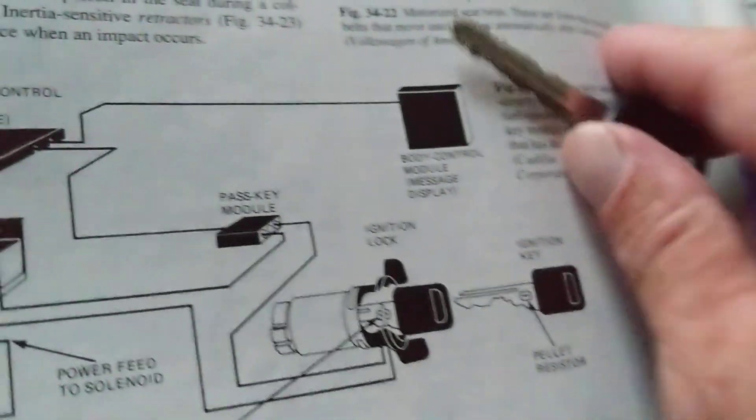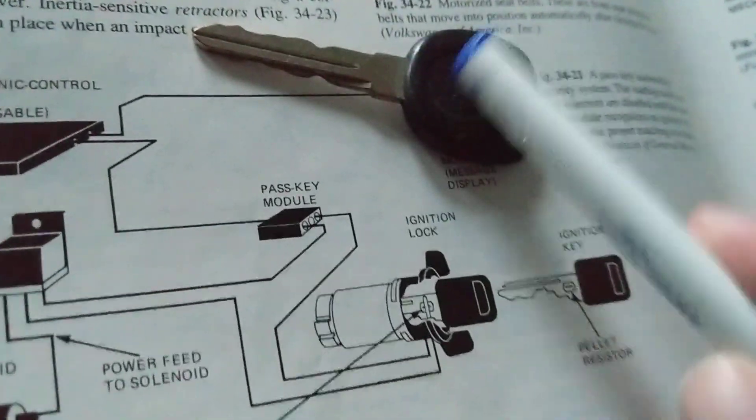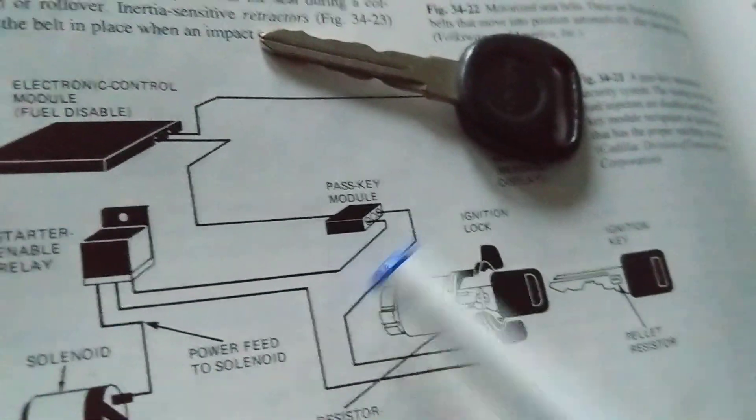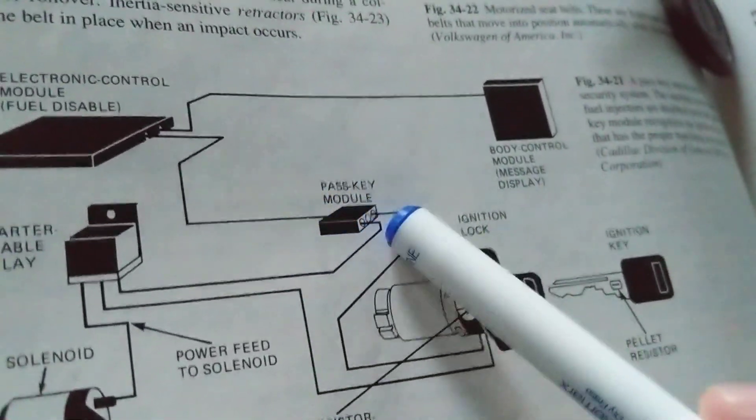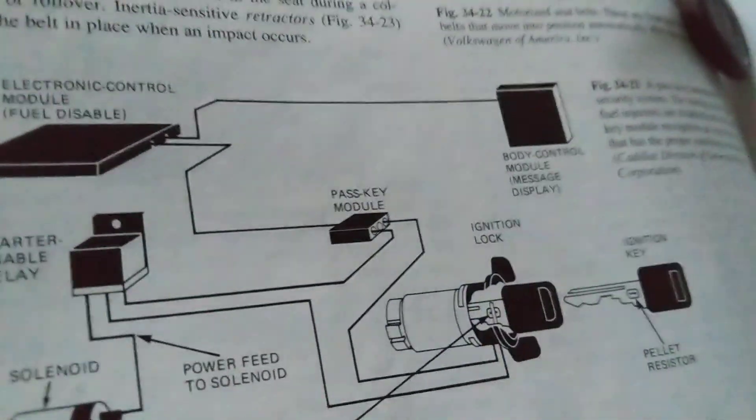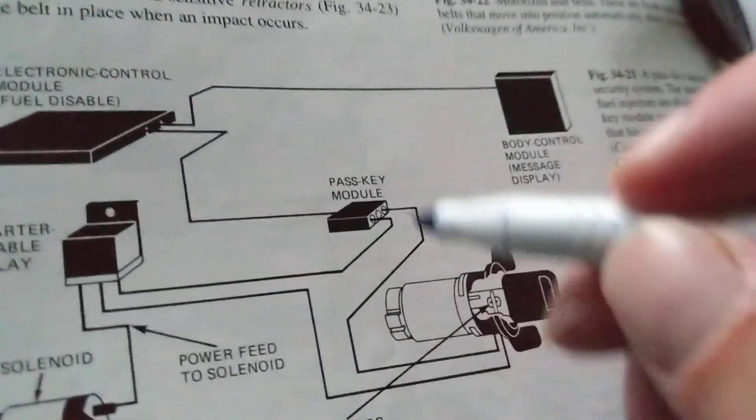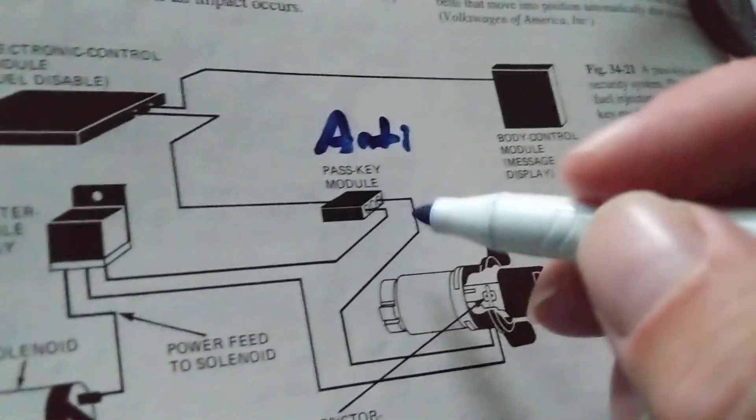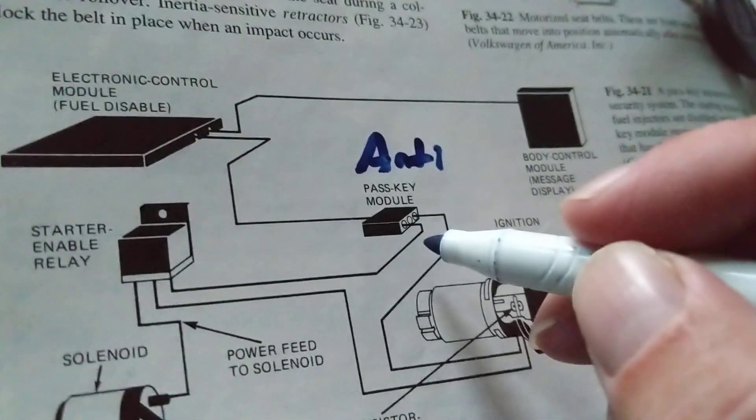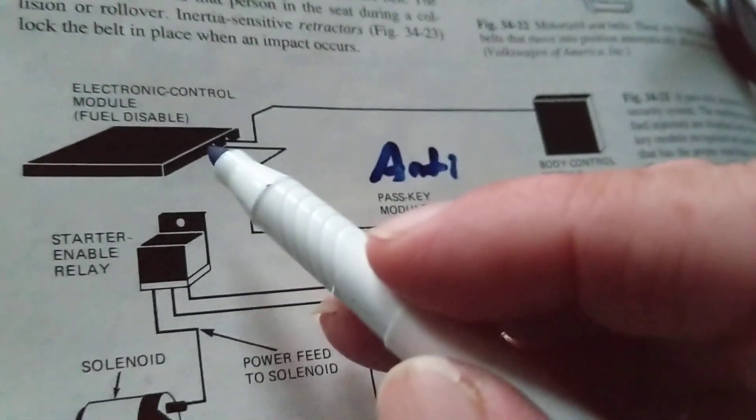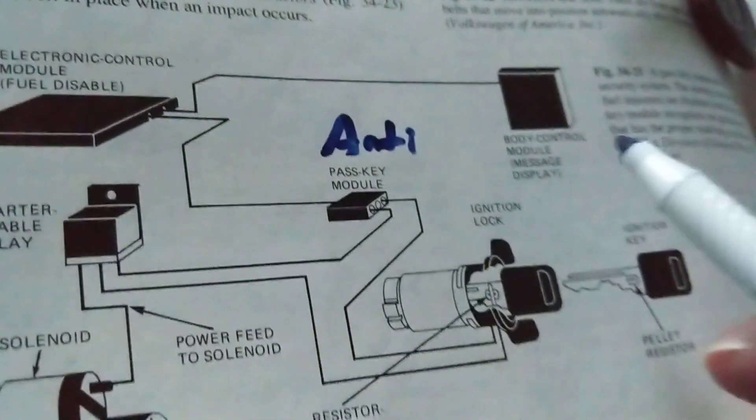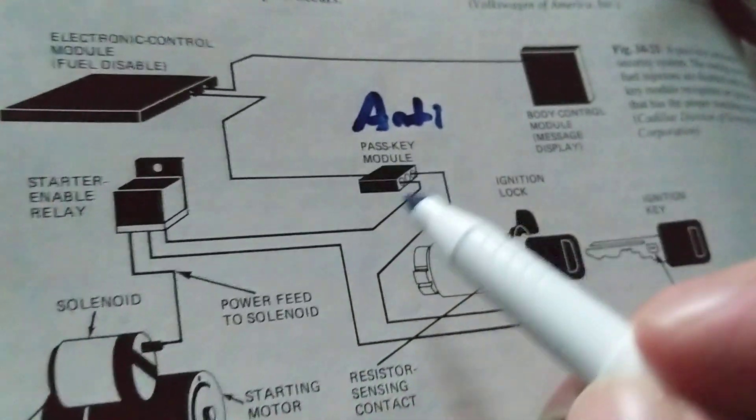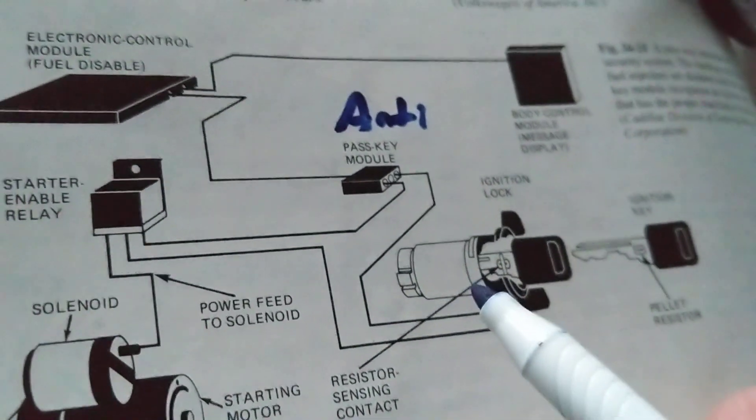That receiver module is looking for the right combination from this key, from this transmitter. Once it receives it and they match, it will allow this pass key module, or security anti-theft system, to speak to the electronic control module and the body control module. They will agree with each other and say the right key is being used.